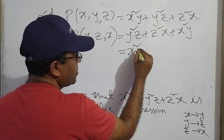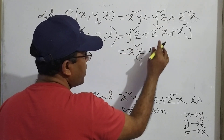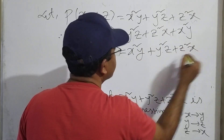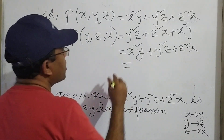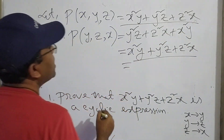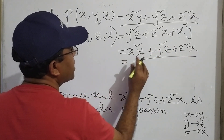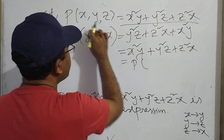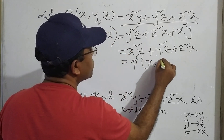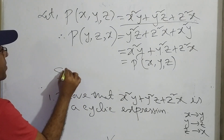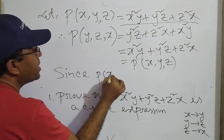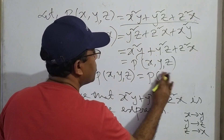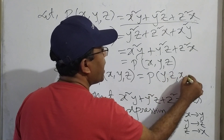After substitution, x squared y, y squared z, z squared x — look at here, student — this is the same. P of x, y, z equals P of y, z, x. Since the expression remains unchanged after the cyclic substitution.